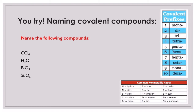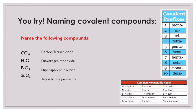Hopefully you had an opportunity to pause the video. Let's go ahead and take a look at the names of these compounds. This first one has carbon and chlorine. The first element is carbon. There are four chlorine atoms, so I use the prefix 'tetra'. The non-metallic root for chlorine is 'chlor', and then I end it with '-ide'. So that's carbon tetrachloride.